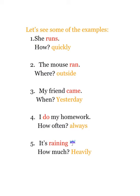Let's see some examples. First sentence: 'She runs quickly.' Here, 'runs' is the verb — shown in red, as you may remember from Jolly Grammar. 'Quickly' is the adverb describing how she runs. Second sentence: 'The mouse ran outside.' 'Ran' is the verb, and 'outside' is the adverb describing where.